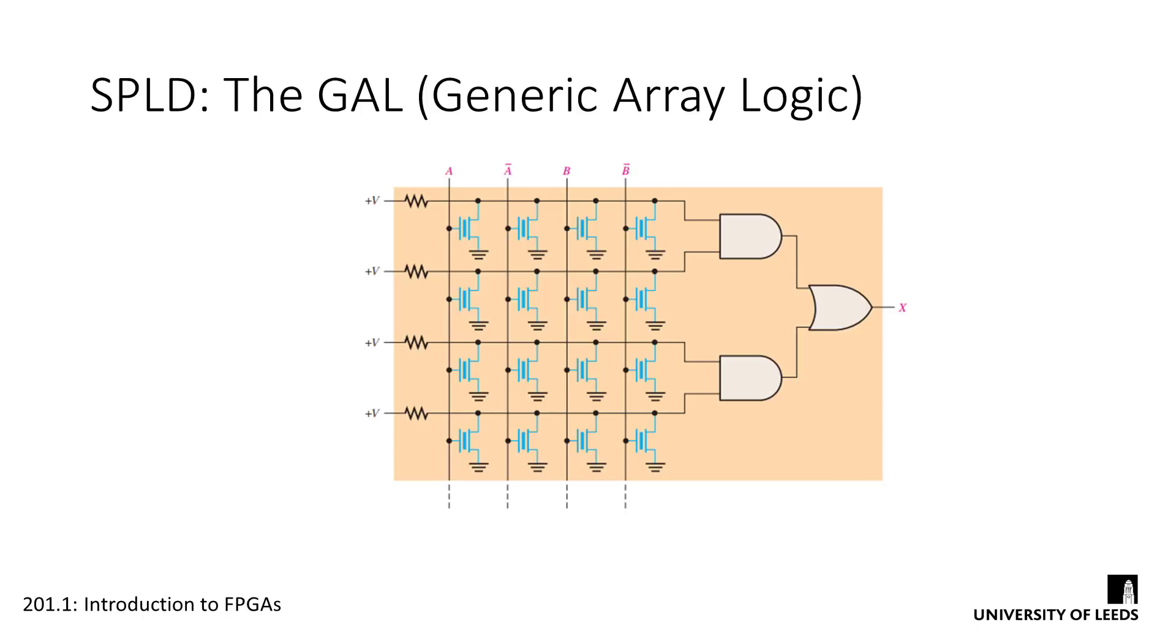In a generic array logic device, the fuses are replaced by transistors, which are enabled or disabled on startup using a technology such as EEPROM or SRAM. This makes the GAL inherently reprogrammable, so designs can be reconfigured multiple times after manufacture.